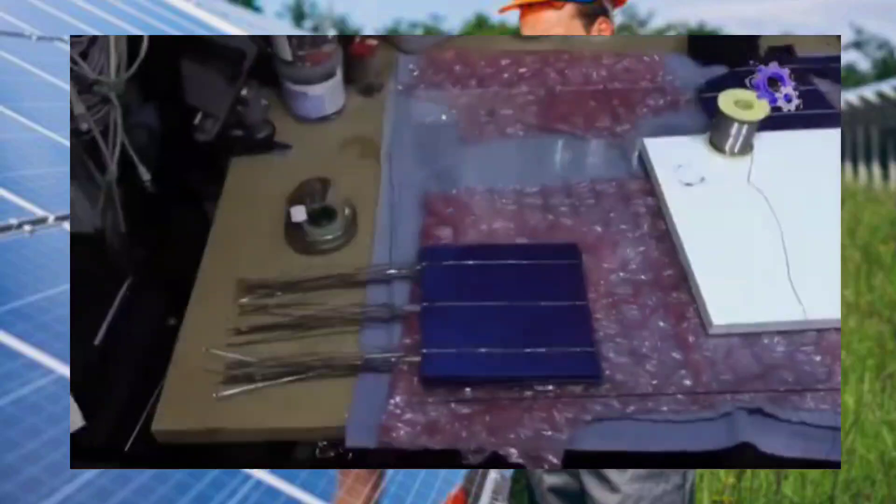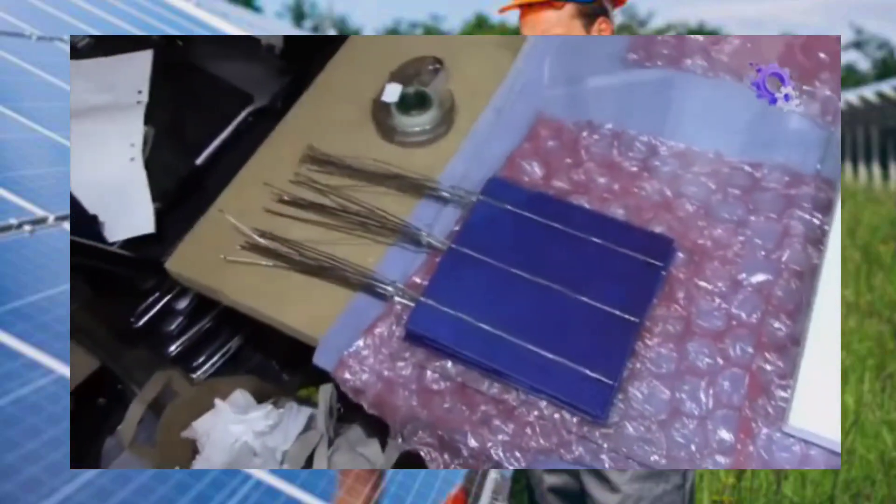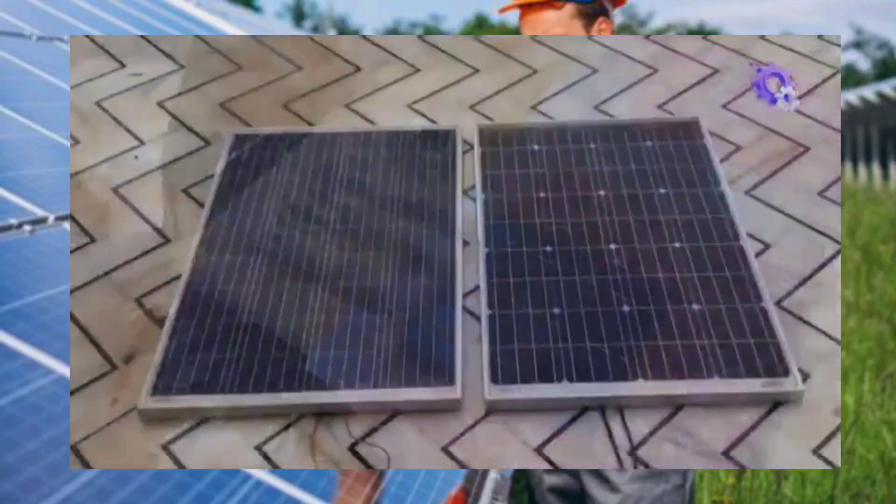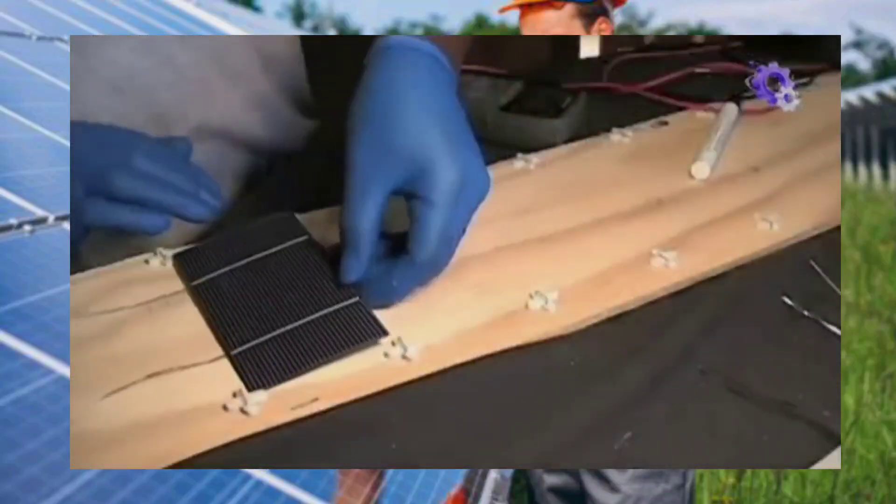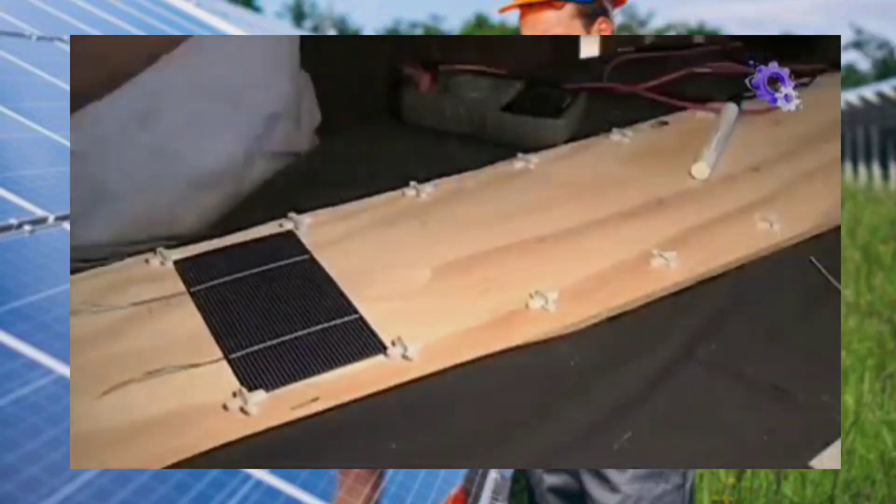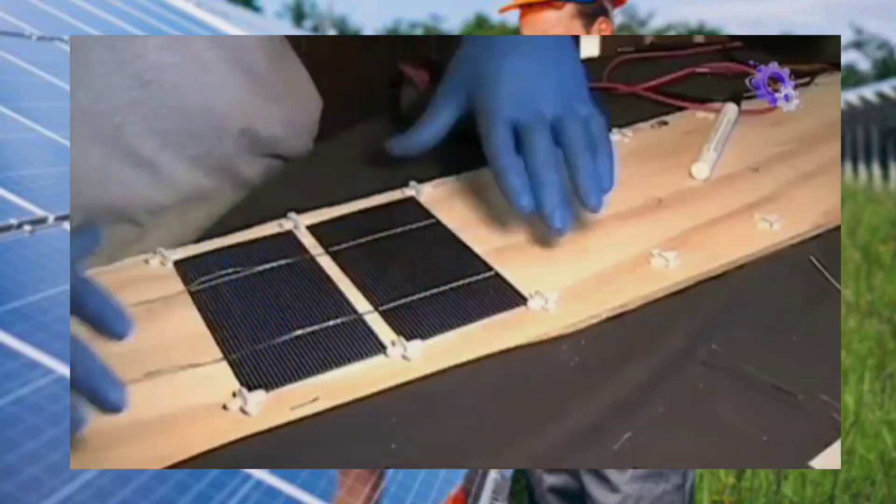Assessing available space and selecting the appropriate type of solar panel are crucial initial steps. Whether you're opting for monocrystalline or polycrystalline cells, understanding your energy needs and available space helps in determining the layout.